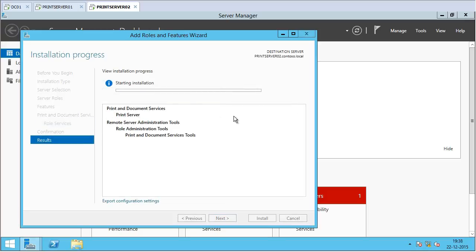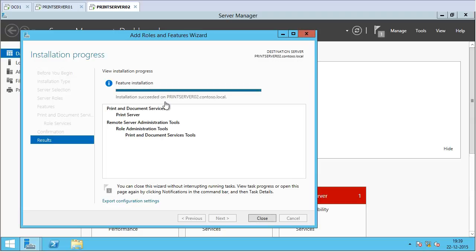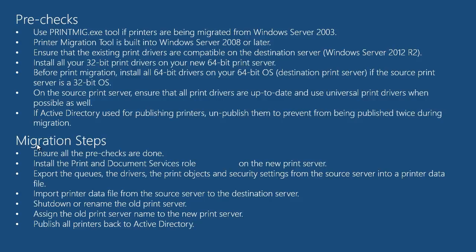The Print and Document Services role is now installing on my destination Print Server 02. The installation has succeeded. So far we have ensured all pre-checks are done with respect to the drivers, unpublished the printers to prevent them from being published twice during migration, and installed the Print and Document Services role on the destination print server. The next step is to export the queues, drivers, print objects, and security settings from the source server and save them as a printed data file.